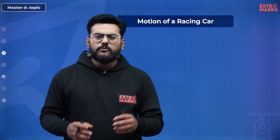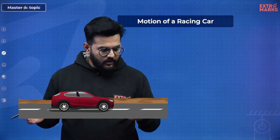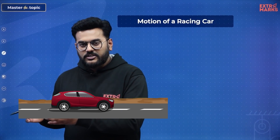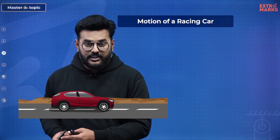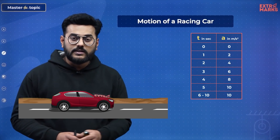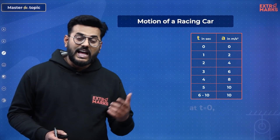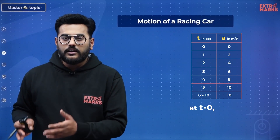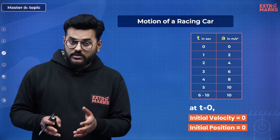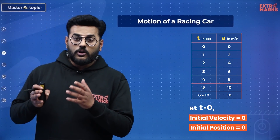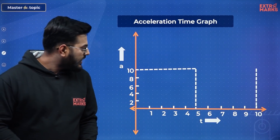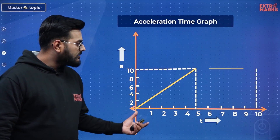Let us consider a case of a racing car moving on its track. For the initial few seconds — as you might know from Formula One — the car is in accelerating mode. We are provided with values of acceleration at every second. Also, at T = 0 the car had initial velocity 0, meaning it started from rest, and its initial position is considered to be 0. With these pointers, we can draw an AT curve of this racing car.